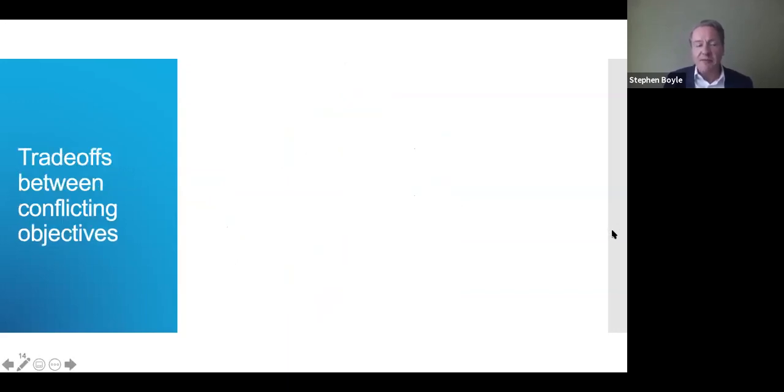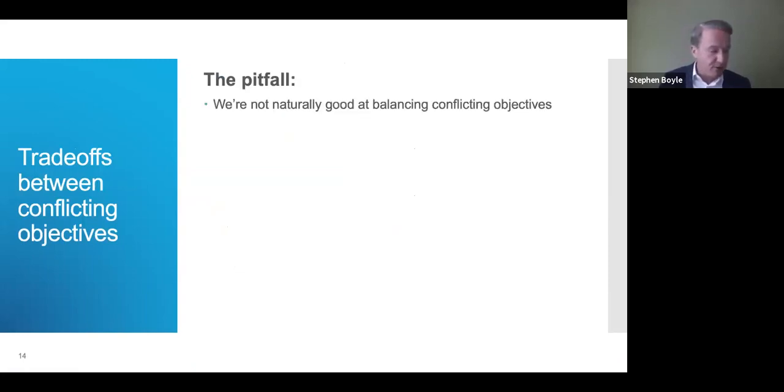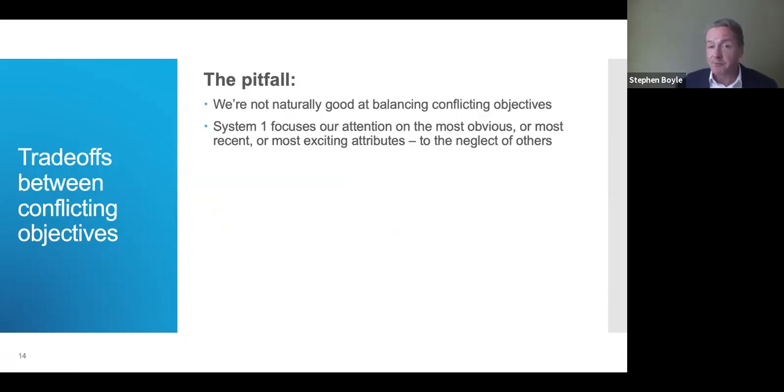And there is one more pitfall and solutions that I want to offer you which is what to do when we deal with when we face trade-offs between our conflicting objectives. Well the problem is we're not naturally good at balancing the conflict between objectives. Either we tend to ignore or downplay certain objectives or we bump up one or the other and we don't search for enough alternatives that might meet both. So our System One thinking in particular tends to focus our attention on what's most obvious or most recent or most exciting.